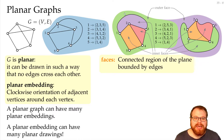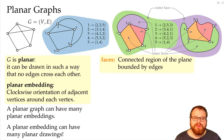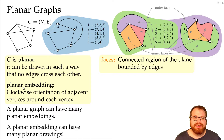For planar graphs, the description of the faces is actually equivalent to the description of the adjacent vertices around every vertex. So instead of writing the vertex orientations, we can also give a description of how the faces look — which vertices are around each face and how they are ordered — and that also uniquely gives us a planar embedding.